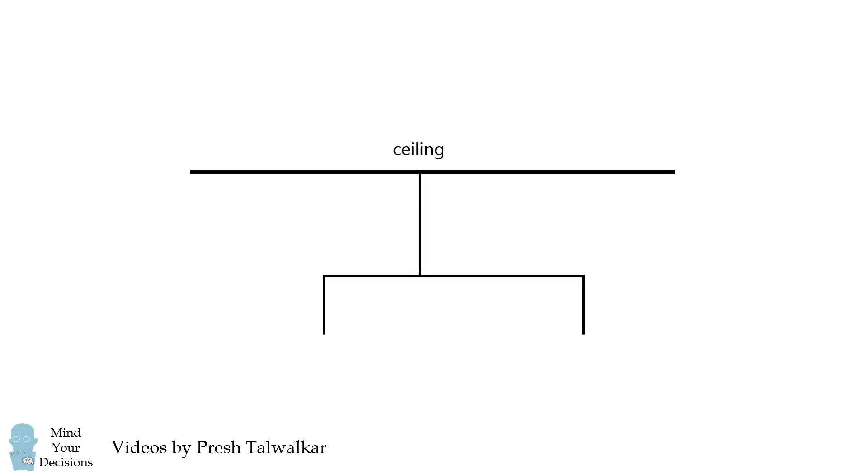The principle to solve this problem is balancing torque. Suppose one side has a distance of d1 and a mass of m1, and the other side has d2 and m2. Then m1 times d1 has to equal m2 times d2.